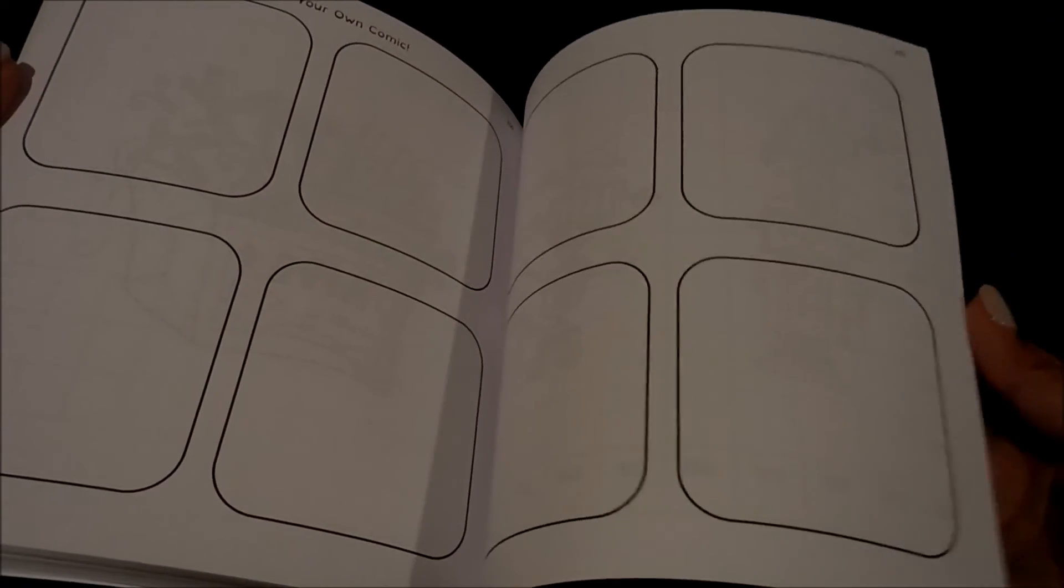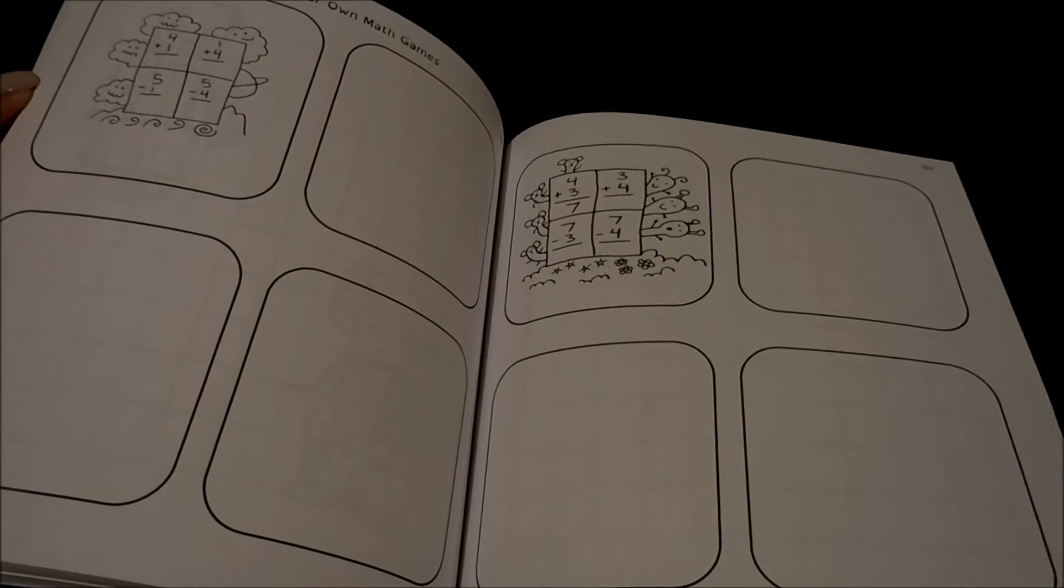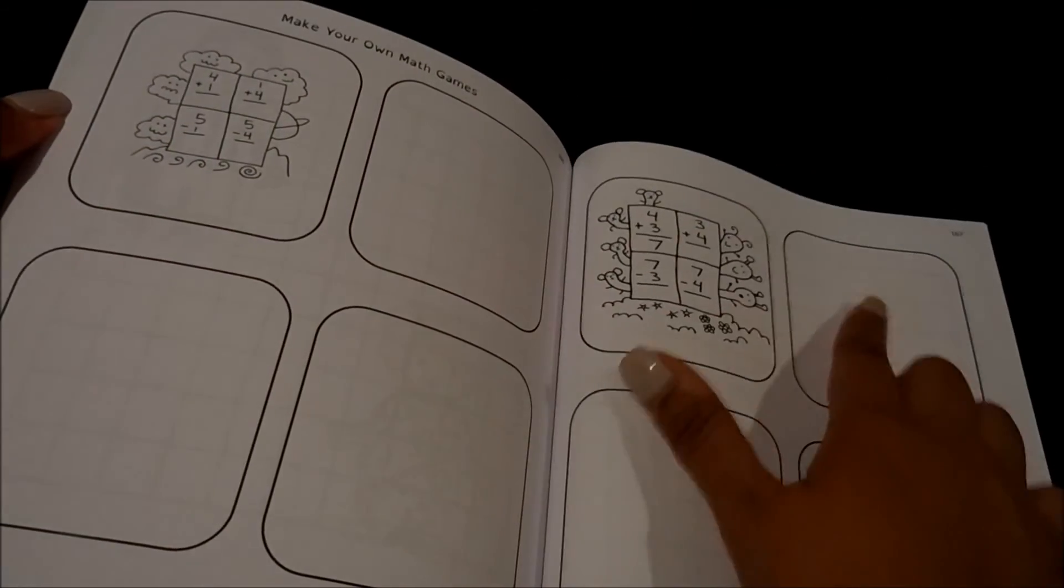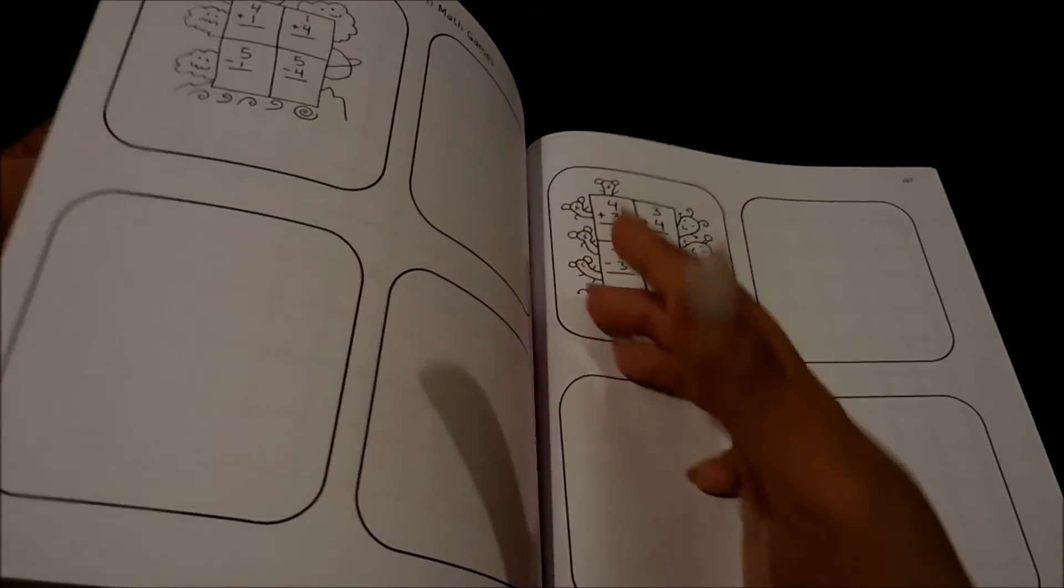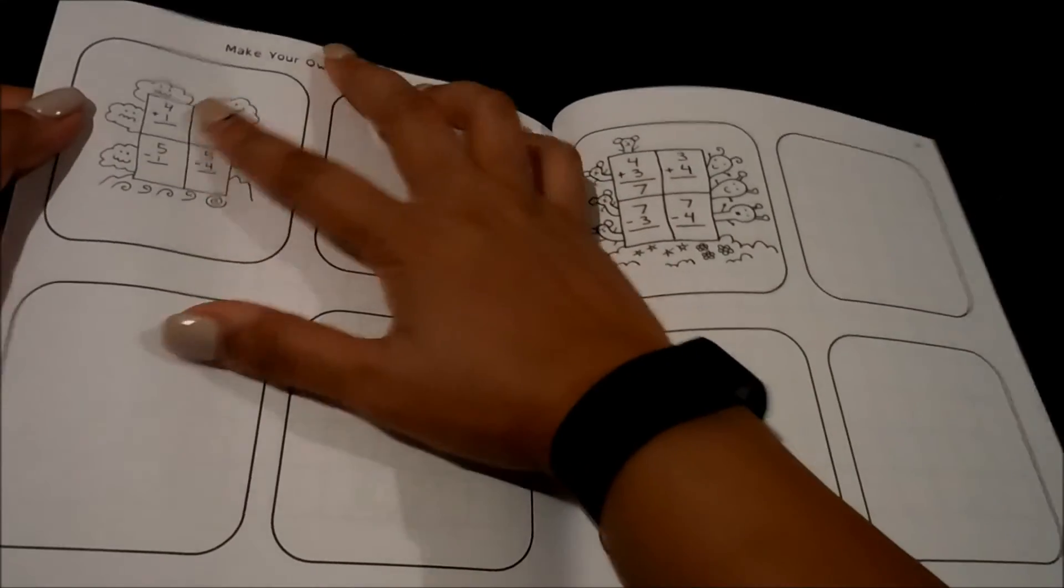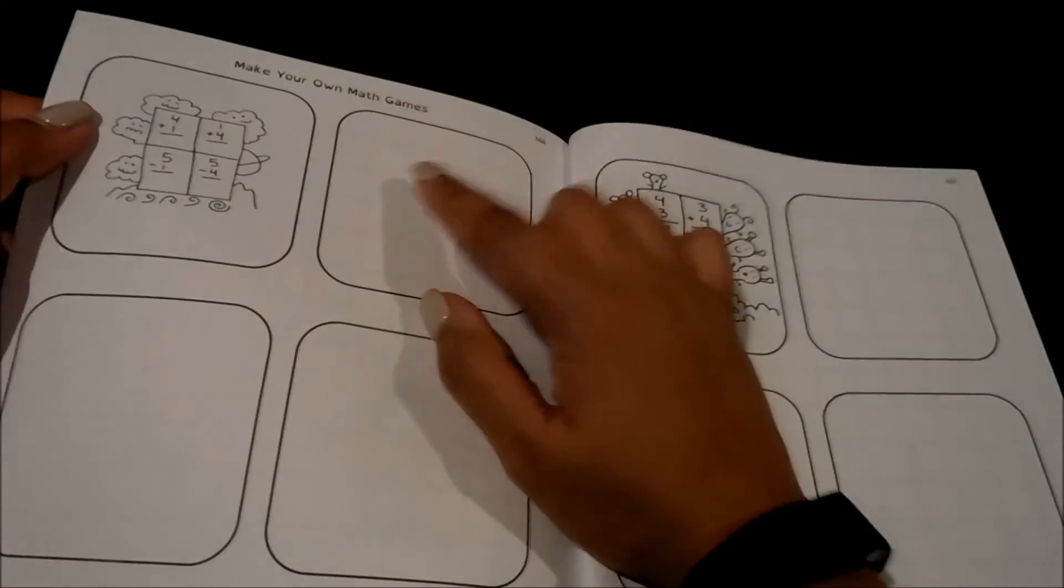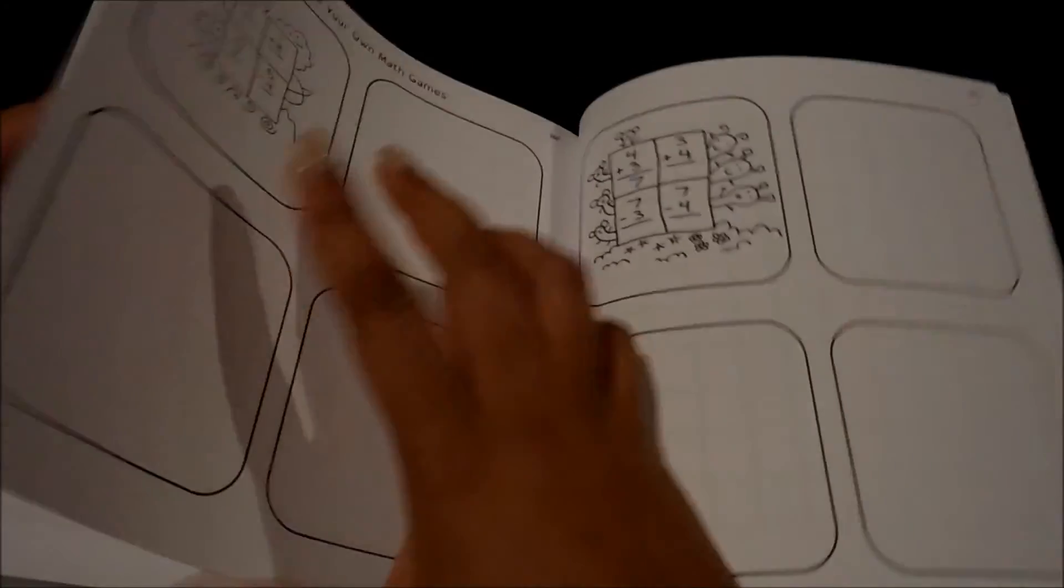And you can make your own comic here. You have a really big tree there. More of the grids. And you can make your own fun math games. So the kids are not just doing what is told to them, they can create their own. And so that is the book.